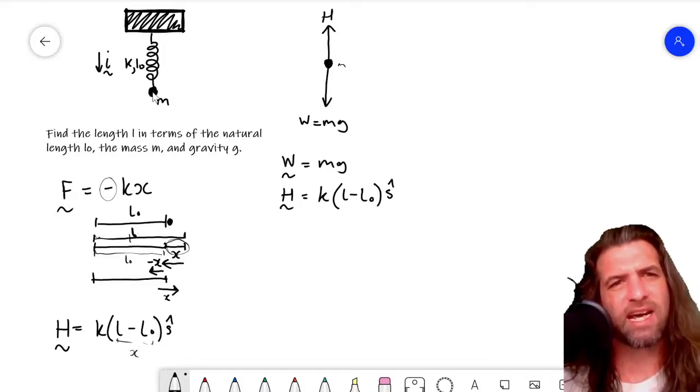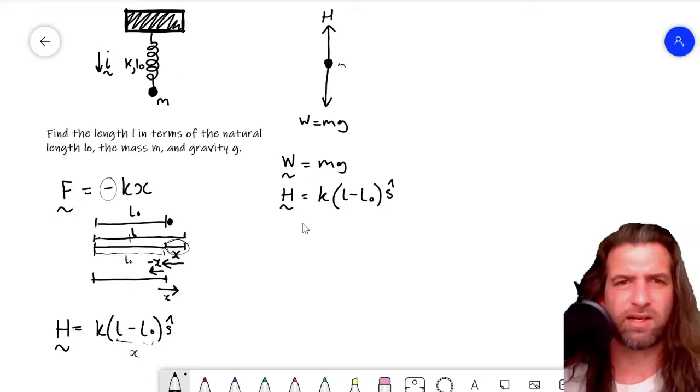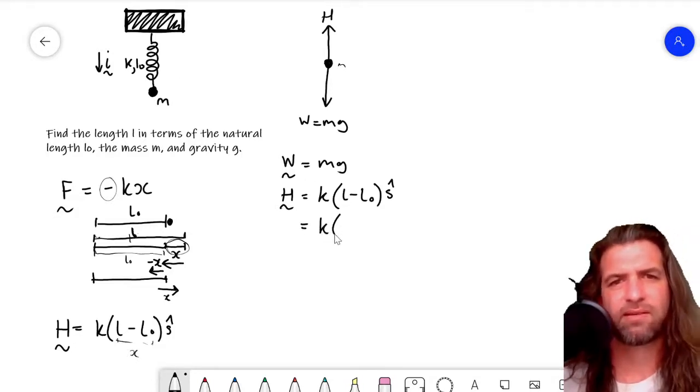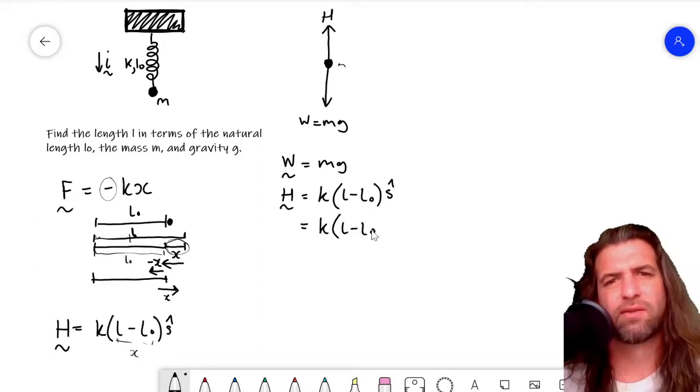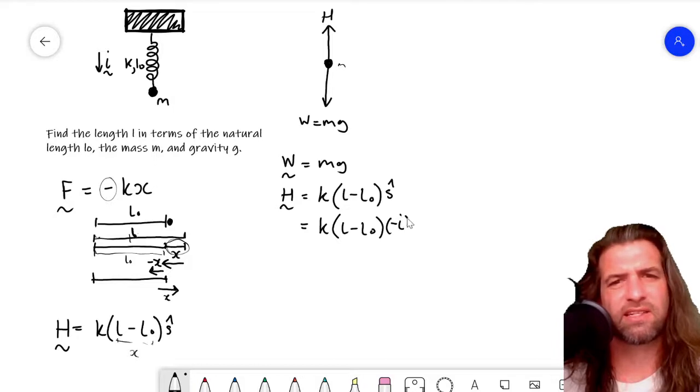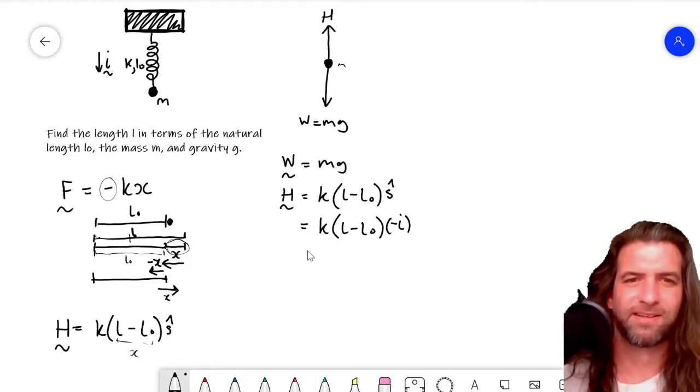The spring force is acting in the opposite direction to i. So we can rewrite this as k(L - L0) times minus i, because it's going in the minus i direction. So we can rewrite this again. Minus k(L - L0)i.